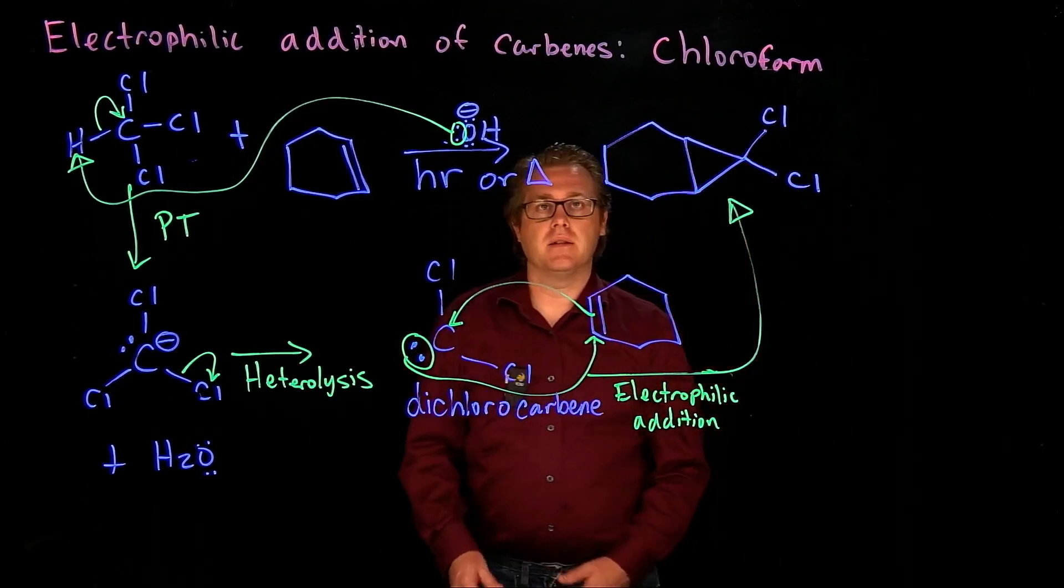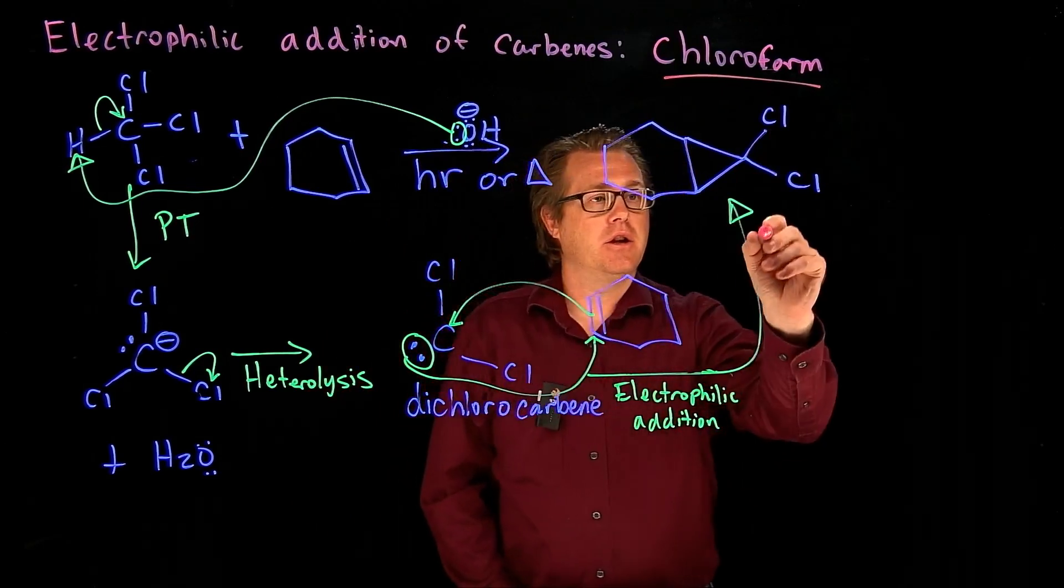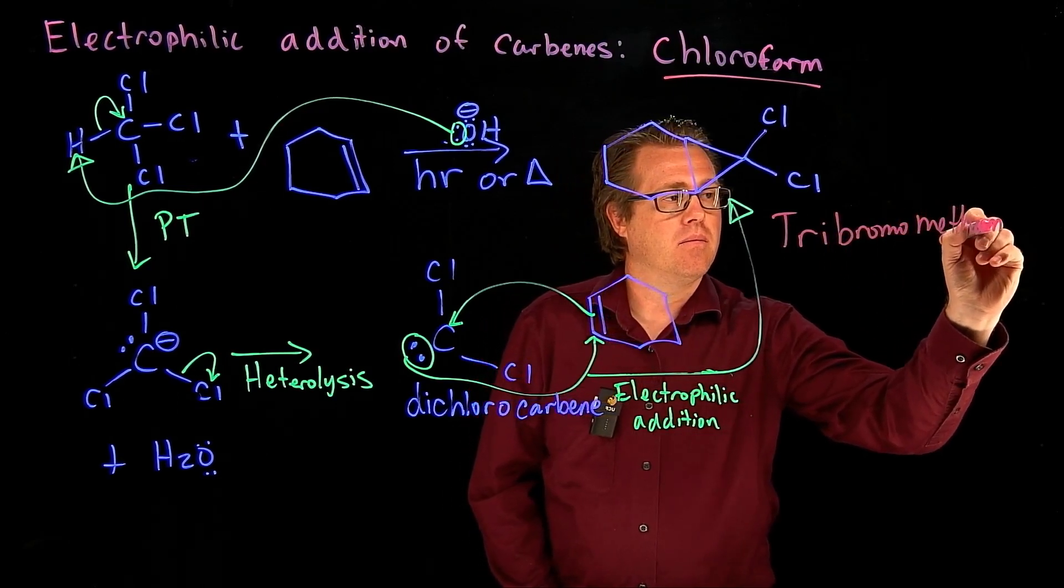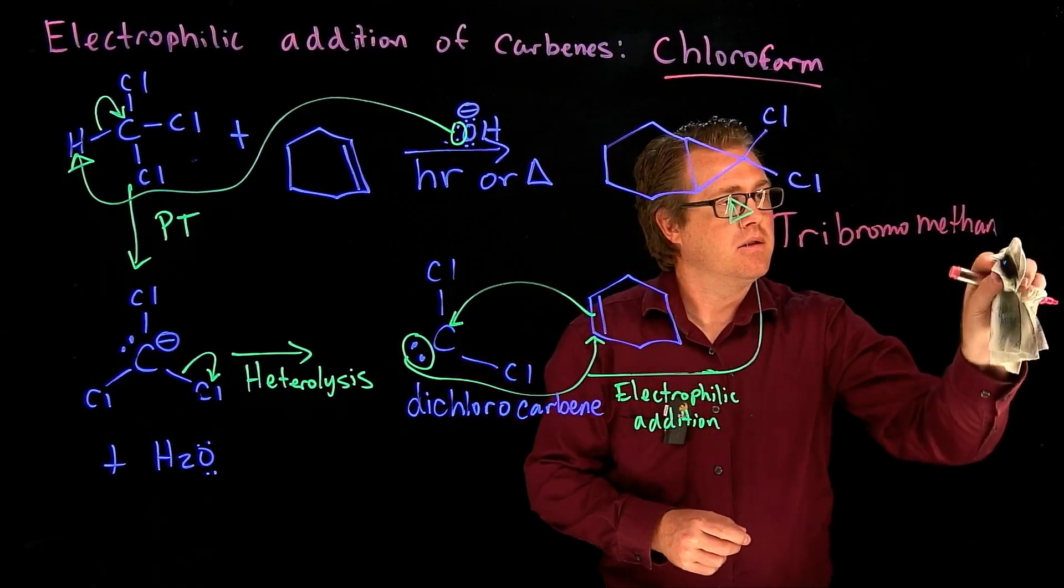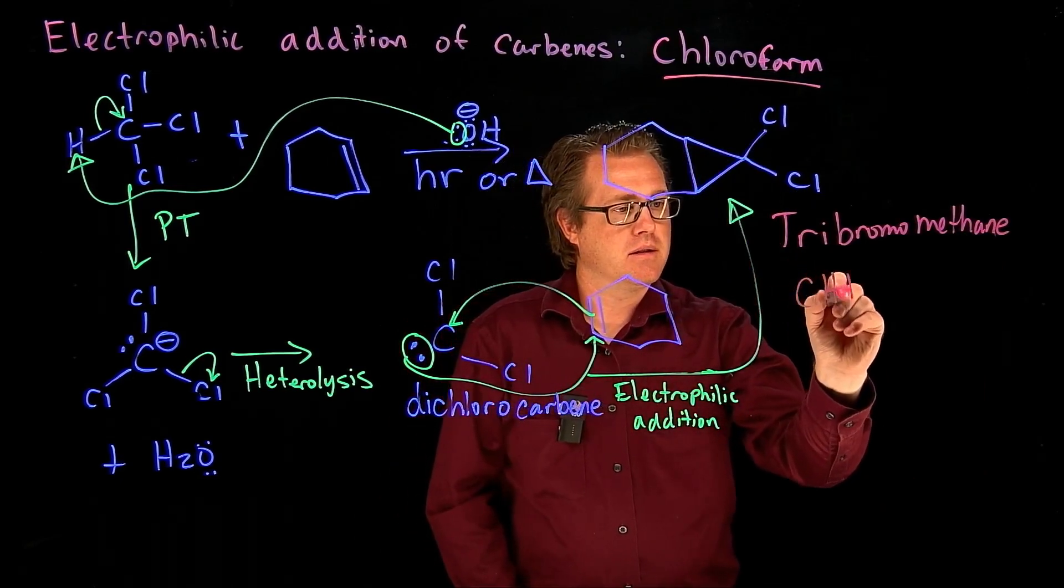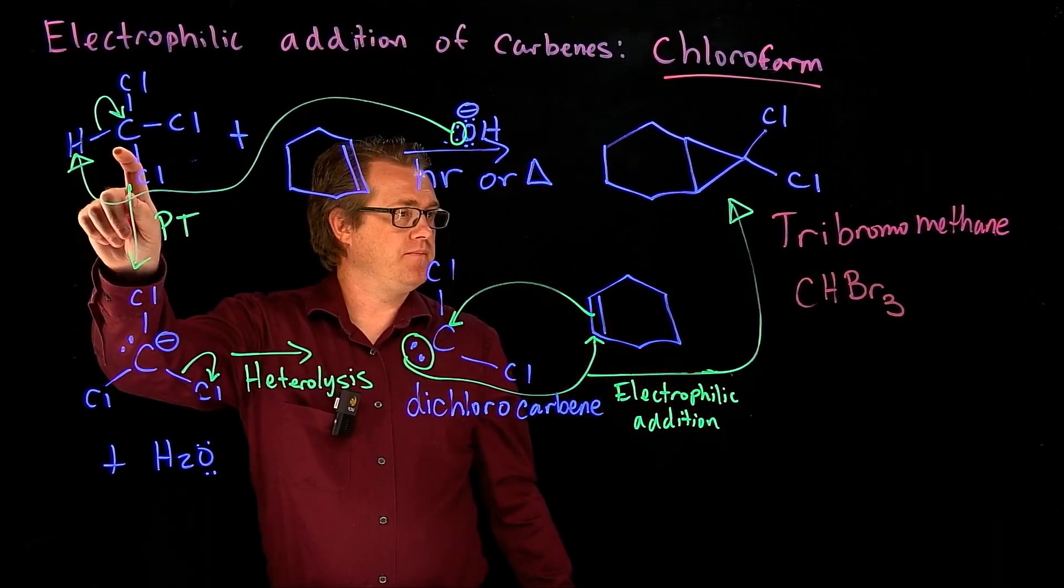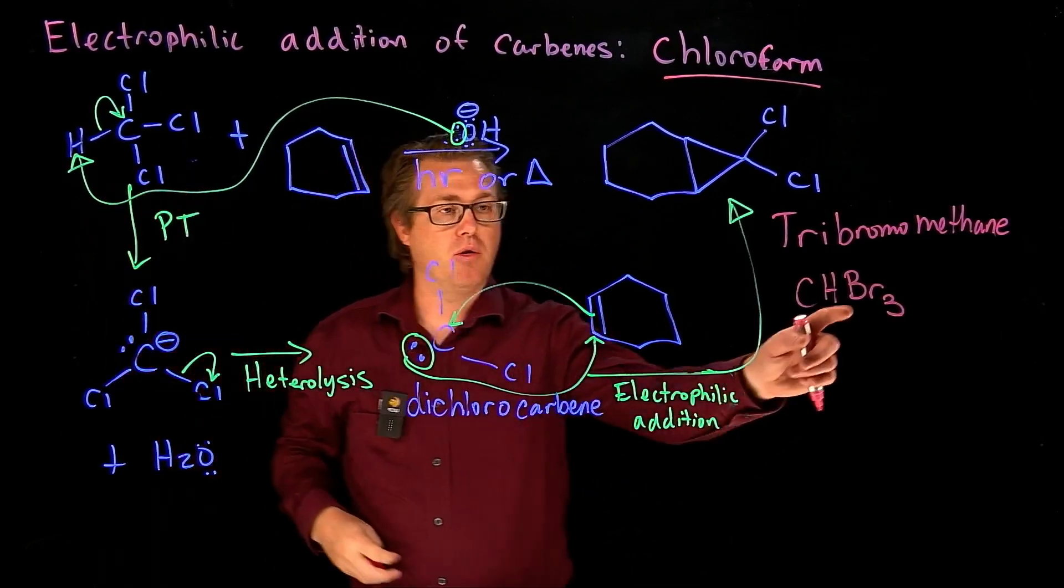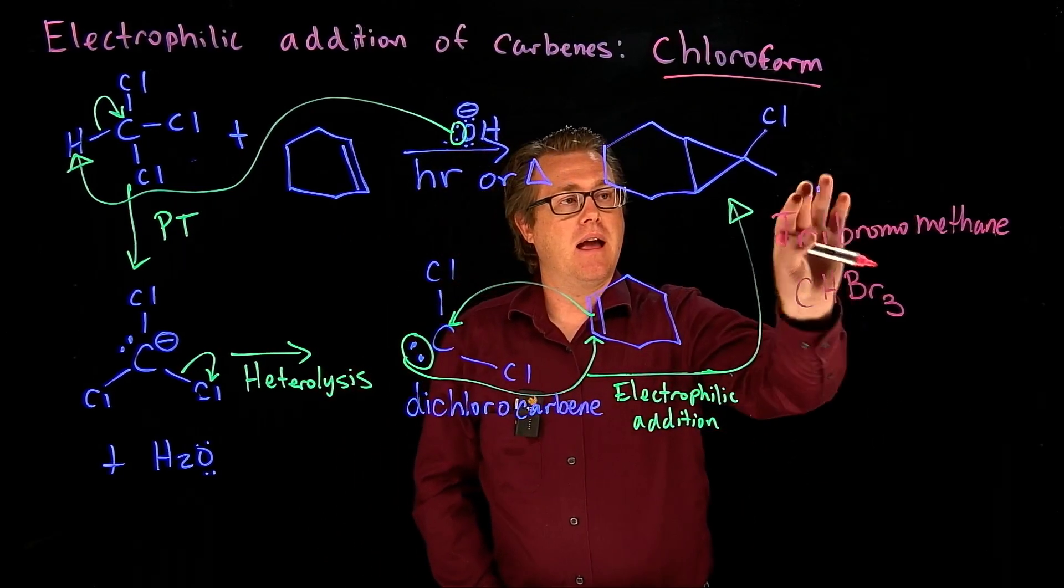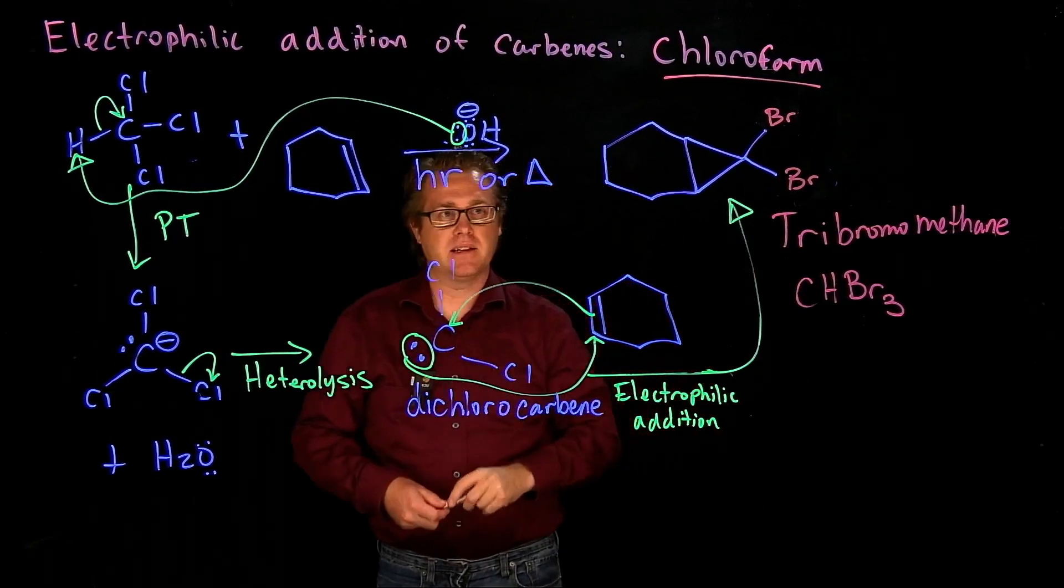So a little side note to this reaction is you can, instead of using chloroform, you could use a compound called tribromomethane. That would have a chemical formula like this: CHBr3. Do you see how it resembles chloroform? It's just now we've replaced those three chlorines with bromine. And so you can do the same reaction, follow the same mechanism, just with tribromomethane, and then the difference would be you would have your bromines right there. But the same mechanism would apply.